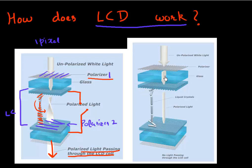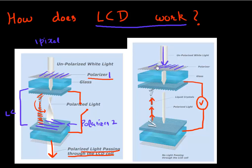On the other hand, if you want to turn off this pixel and not allow any light through it, you apply a potential across the liquid crystal. The liquid crystal molecules have some inherent polarization, so they all line up in the direction of the electric field. Now when light passes through polarizer one, it has that polarization, and when it passes through the liquid crystal, the liquid crystal does not bend the light anymore. So when it hits the second orthogonal polarizer, no light can pass through, and the pixel appears black.